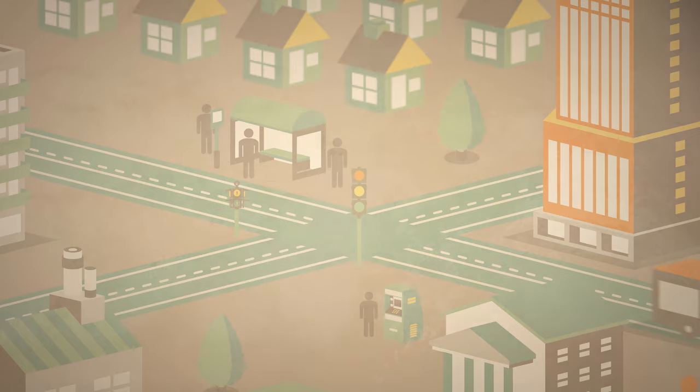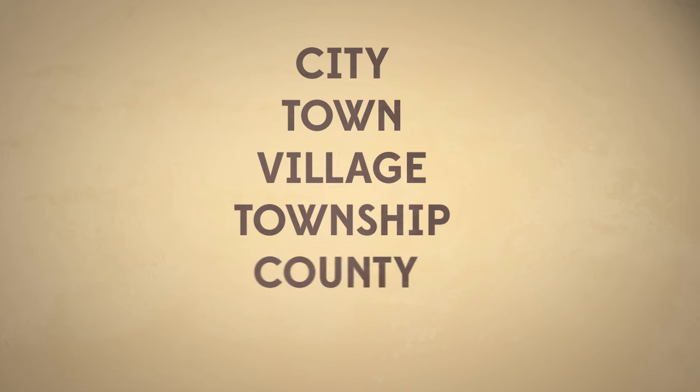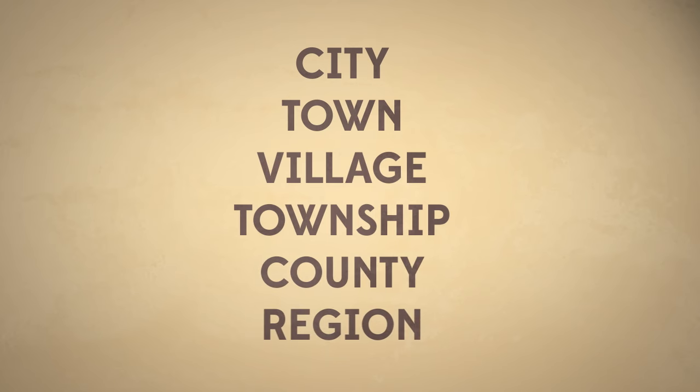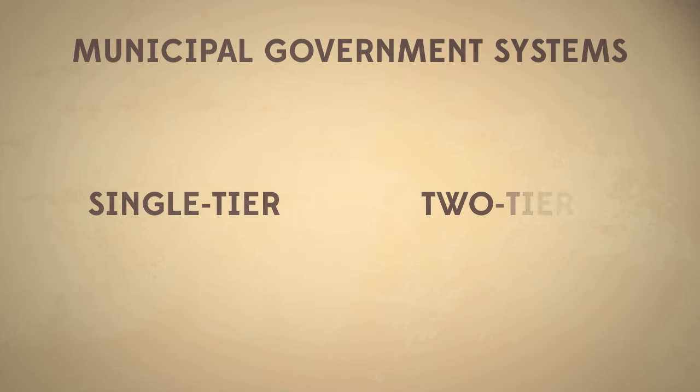A municipality can be called a city, town, village, township, county, or region, and they are part of either a single-tier or a two-tier system of government.